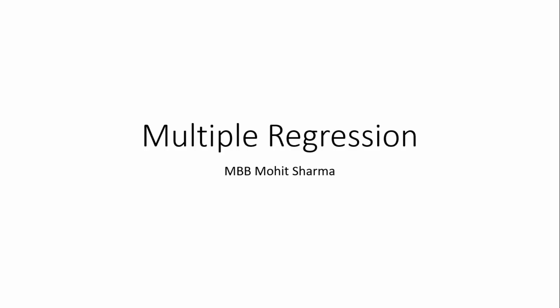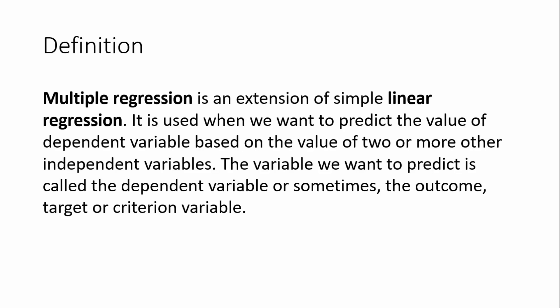Today's topic of discussion is multiple regression. Multiple regression is an extension of simple linear regression. It is used when we want to predict the value of a dependent variable based on the value of two or more independent variables. The variable we want to predict is called the dependent variable, or sometimes the outcome, the target, or criteria variable.